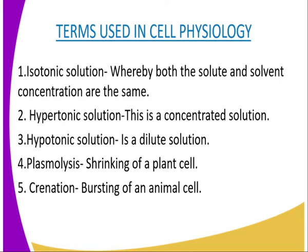The membrane of animal cells is semi-permeable, just like the visking tubing as we observed in our previous lesson. The cytoplasm contains dissolved salts and sugars in solution form. If an animal cell, for example a red blood cell, is placed in distilled water or a hypotonic solution, there will be a net flow of water into the cell by osmosis. The cell would swell up and eventually burst. The bursting of the red blood cell is what we refer to as haemolysis.